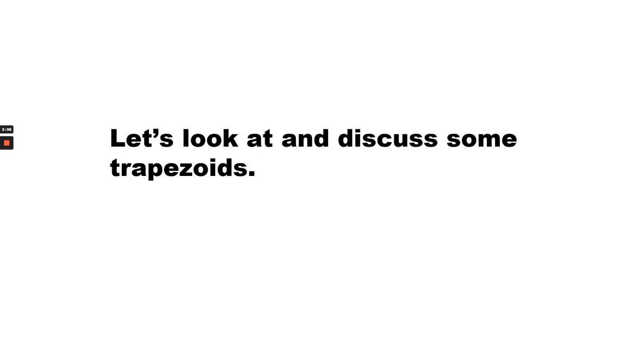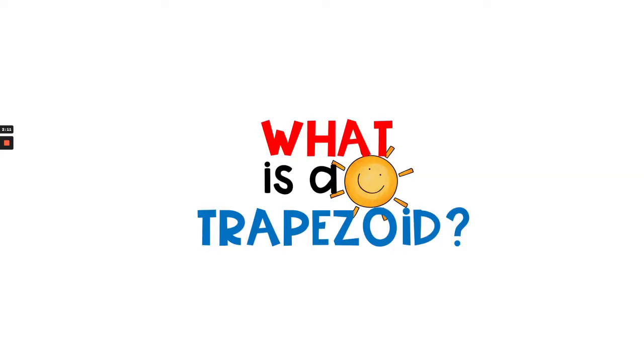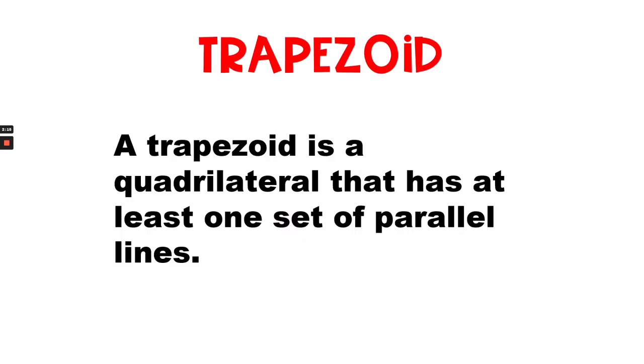Let's look at and discuss some trapezoids. What is a trapezoid? Well, a trapezoid is a quadrilateral that has at least one set of parallel lines.